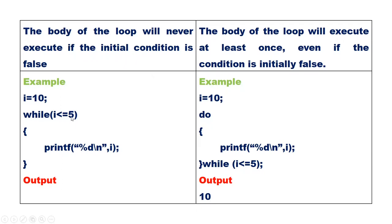Because the condition is false initially, in the case of while loop the loop body will never execute. But in the case of do-while loop, the loop body will execute at least once even if the condition is false initially. This is the main difference between while loop and do-while loop. Thank you.